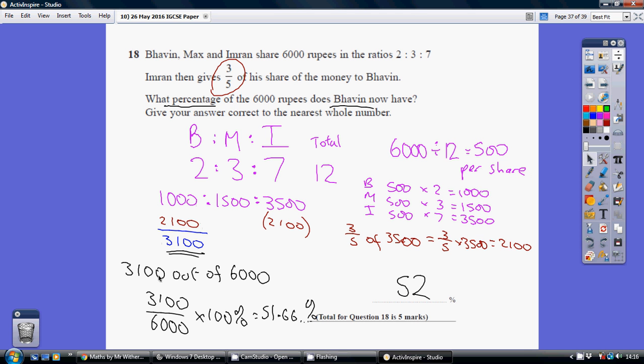He gets 3100 out of the 6000. To turn that into a percentage, we just do 3100 divided by 6000—that takes it back to a decimal—multiply it by 100 to turn it into a percentage, which is 51.66...%. So to the nearest whole number, that's 52%.